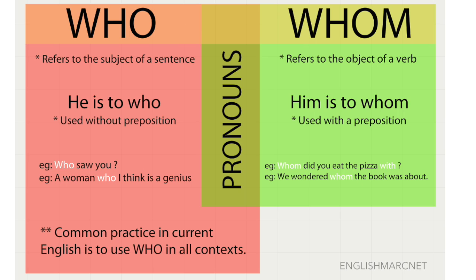The second example is a positive sentence. In the who box, in the red box: 'A woman who I think is a genius.' So I'm referring to the subject — to the woman.